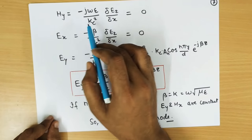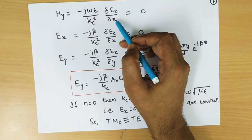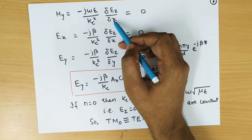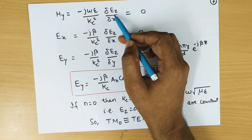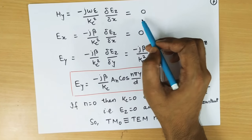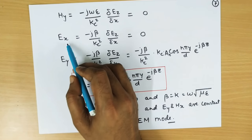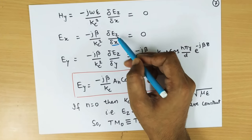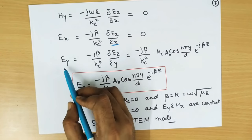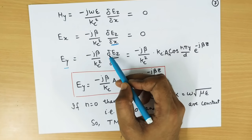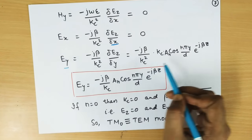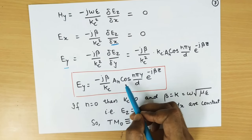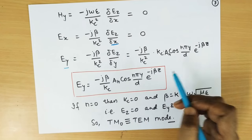H_Y is the partial derivative of E_Z with respect to x, and since there is no variation with respect to x, H_Y equals 0. Similarly, E_X will also be 0, as it involves a partial derivative with respect to x. E_Y can be calculated and found as minus j beta over k_c times cos(n pi y over D) times e to the power minus j beta z.